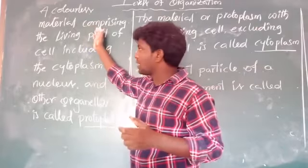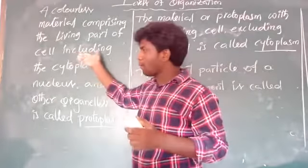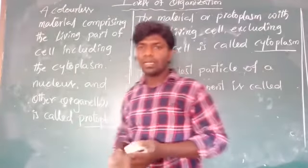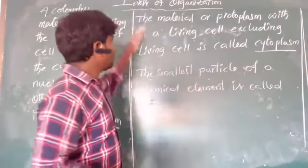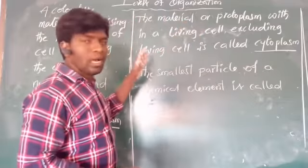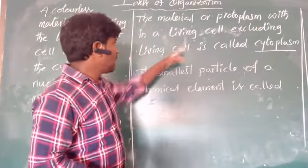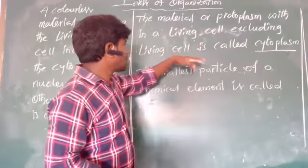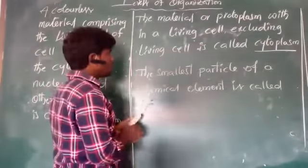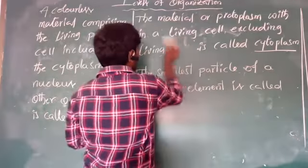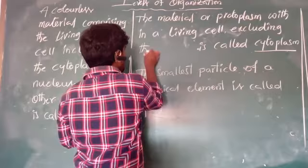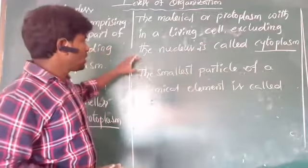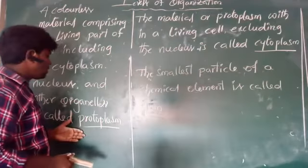Along with protoplasm, the cytoplasm, nucleus, and other organelles are present in the cell. Cytoplasm is defined as the protoplasm within a living cell excluding the nucleus. So the material within a living cell, excluding the nucleus, is called cytoplasm.